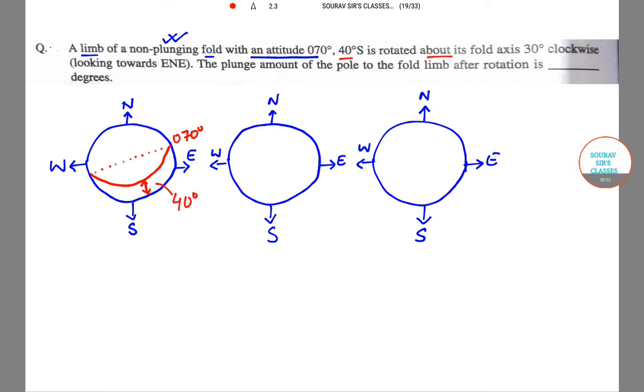Is rotated about its fold axis 30 degree clockwise towards ENE. So you get something like this. And this is 70 degrees. Let me complete the last diagram. The plunge amount of the pole to fold limb after rotation is how many degrees we need to comment.